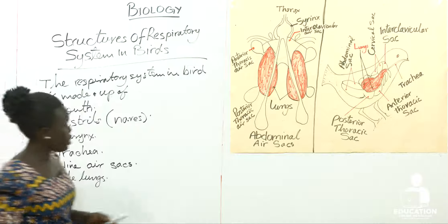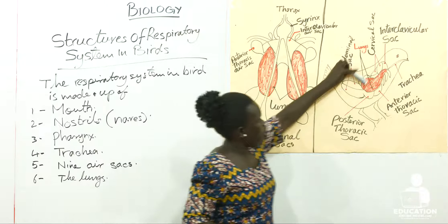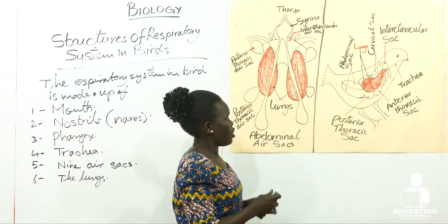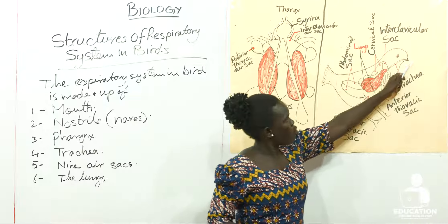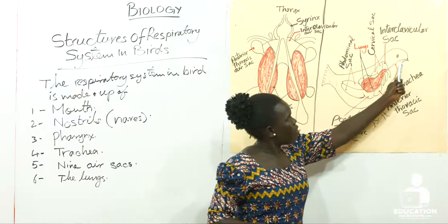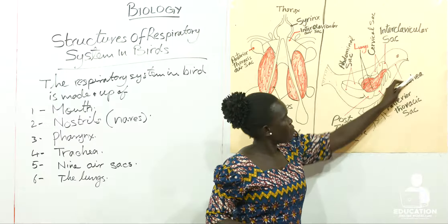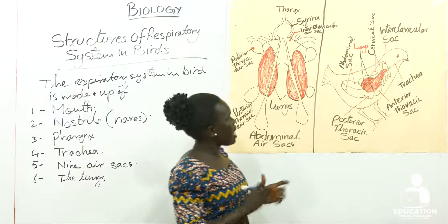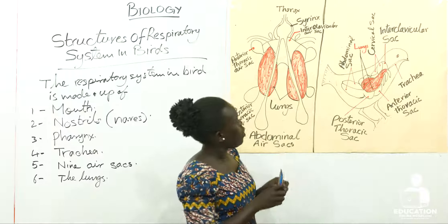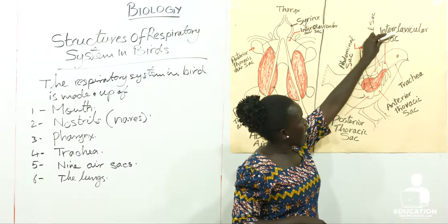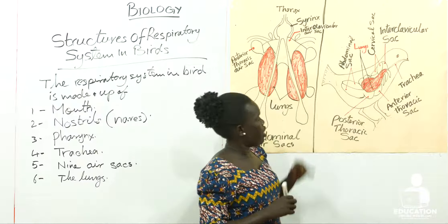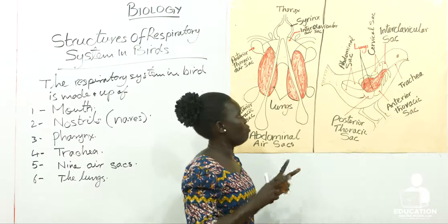We can see from here — this is a sketch of a bird. The respiratory system is made up of the mouth, then the nostril, followed by the pharynx, then the trachea. The nine air sacs are as follows: one interclavicular sac — it is only one. The rest of the air sacs come in pairs of two.